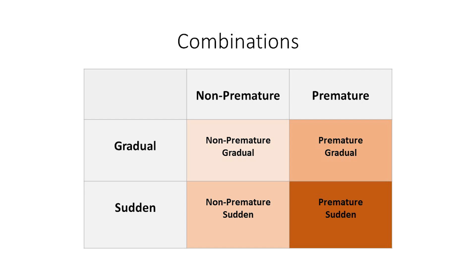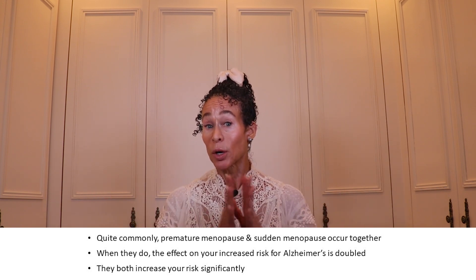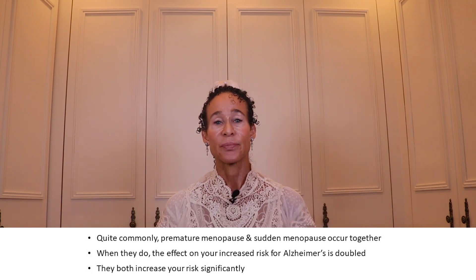The lightest cell shows non-premature gradual menopause with the lowest risk. Below that, non-premature sudden menopause has an intermediate risk level. In the next column, premature gradual menopause appears in a darker color indicating higher risk. And premature sudden menopause is the darkest, indicating very high risk. Quite commonly, premature menopause and sudden menopause occur together, doubling the effect on your increased risk for Alzheimer's. Obviously, you don't typically have control over when or how you lose your estrogen.